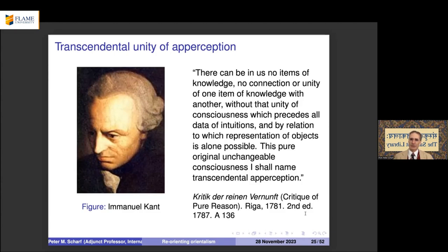Kant identifies 'transcendental apperception' — a pure, original, unchangeable consciousness — as the unity of consciousness that precedes all data of intuitions, both those from the senses and internal impressions. This unity he recognizes as fundamental to all knowledge. Since we do have knowledge, we must presuppose such a transcendental unity of consciousness; otherwise we wouldn't have the experience of knowledge that we do have.